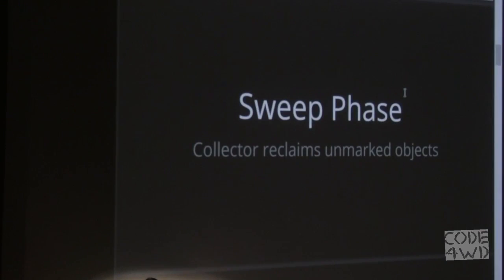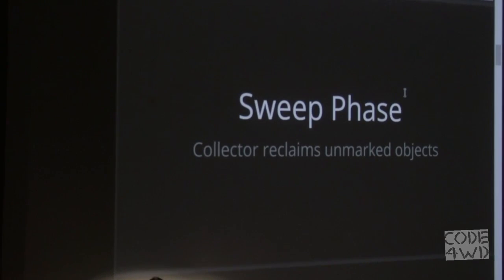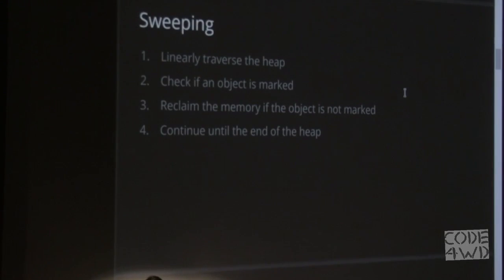The second part of mark and sweep is called the sweep phase. The garbage collector determines which objects are alive by checking marks — either flags or bitmaps — and then reclaims memory so that later on it can be used for new objects. It traverses all memory in the heap one by one. If something is marked, it resets the mark flag so the next run doesn't keep the memory around. It may also track statistics to determine what memory it can reclaim. If it's not marked, the memory is reclaimed, and it continues until done.